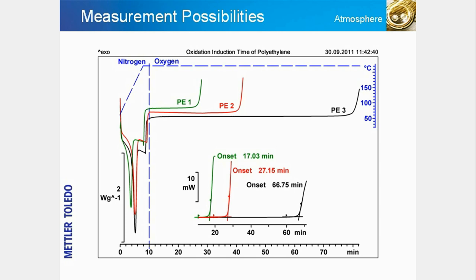Temperature, gas exchange, and the type of atmosphere are parameters that influence sample behavior. Oxidation is a topic of considerable interest, especially in the field of plastics and oils. Oxidation behavior and stability can be studied by heating a sample rapidly to a predefined temperature in an inert atmosphere, usually nitrogen, and then switching over to a reactive oxygen atmosphere.